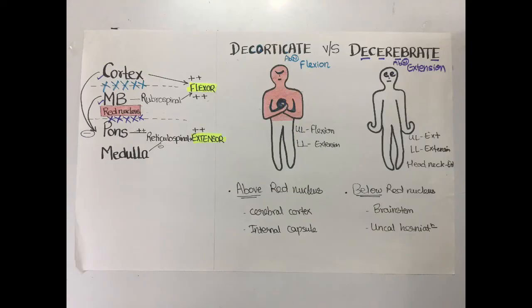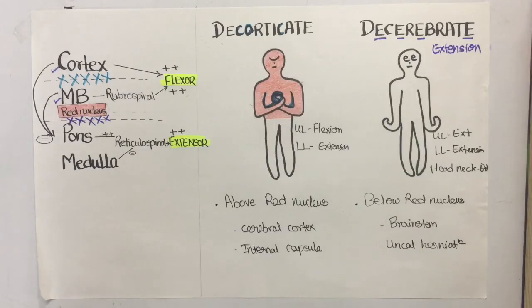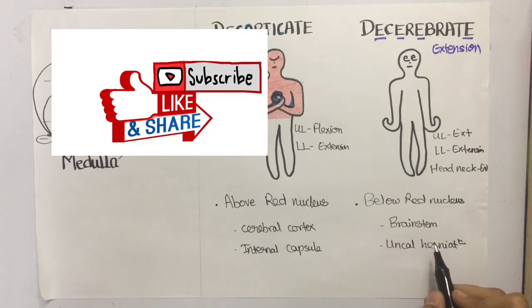You can take a screenshot of this page for further revision and draw these diagrams similarly to avoid the confusion. Also in the comment section do mention the decerebrate type of rigidity will be given what score according to the Glasgow coma scale. Thank you.